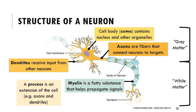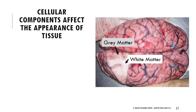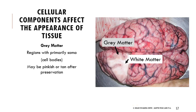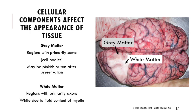The cell body constitutes gray matter - when cell bodies are packed together, that gives gray matter its appearance. When axons are packed together with all that fat around them, that gives white matter its appearance. On the brain, gray matter appears pink or tan, and white matter looks quite white due to the lipid content of the myelin.